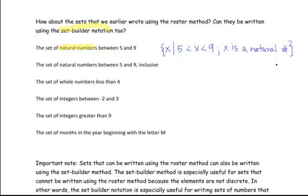The capital letter N is conventionally accepted as the name for the set of natural numbers. Now let's look at another problem: the set of natural numbers between 5 and 9 inclusive. We write: open curly bracket, x such that 5 is less than or equal to x, which in turn is less than or equal to 9. Instead of writing the words 'x is a natural number,' we can use the element-of notation: x belongs to N, the set of natural numbers.